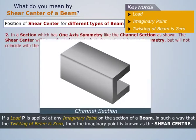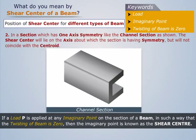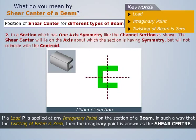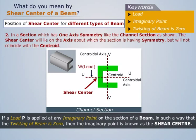In a section which has one axis symmetry, like the channel section as shown, the shear center will lie on the axis about which the section is having symmetry, but will not coincide with the centroid.